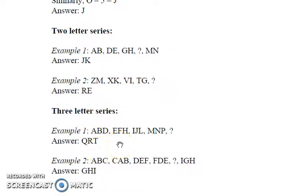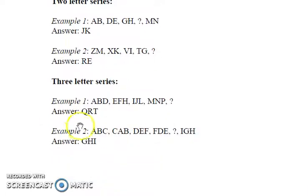In the next series, look at it pairwise. The first term is ABC. The second term contains ABC but in a different order. Each letter is shifted one place to its right.